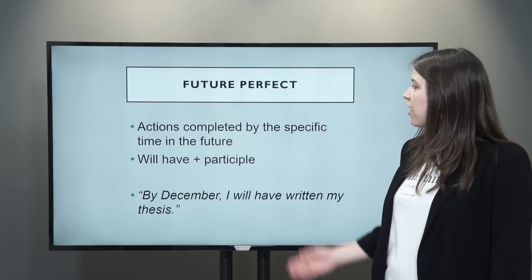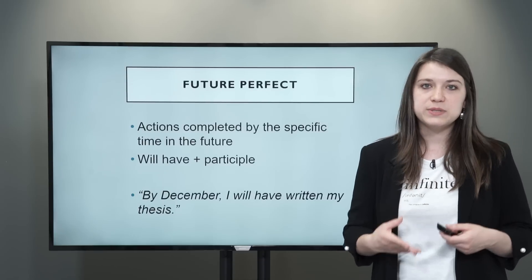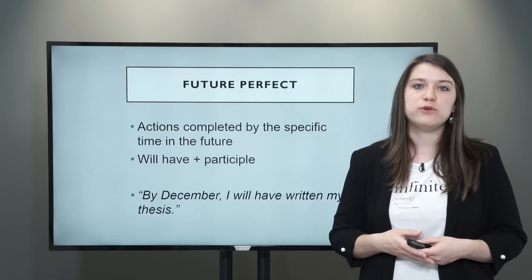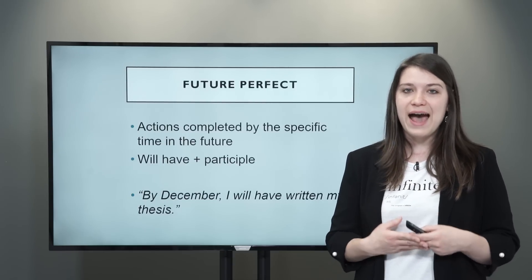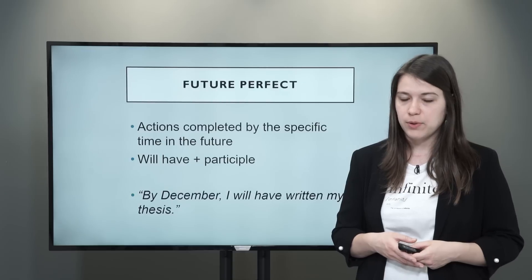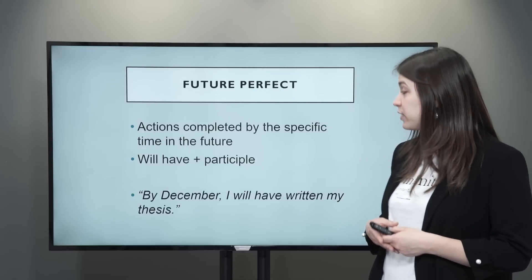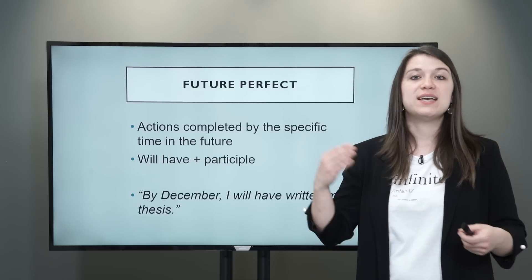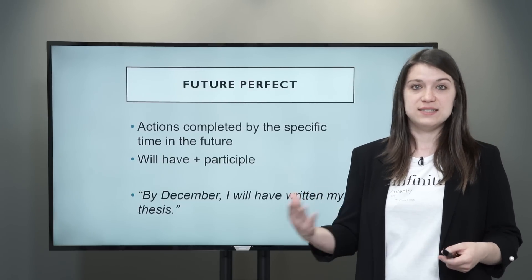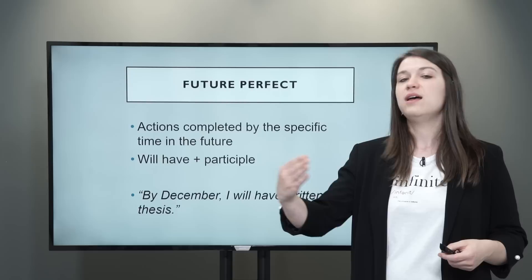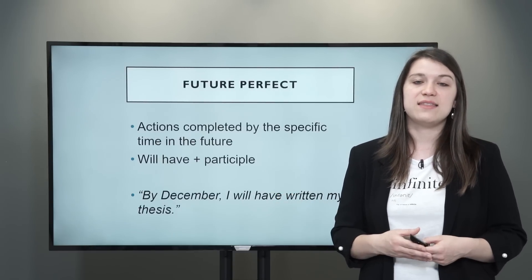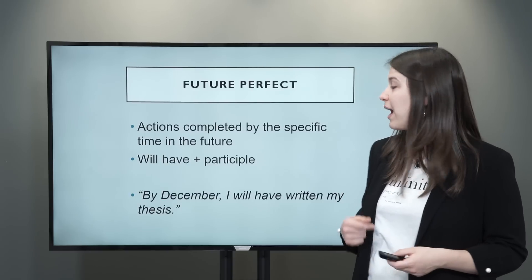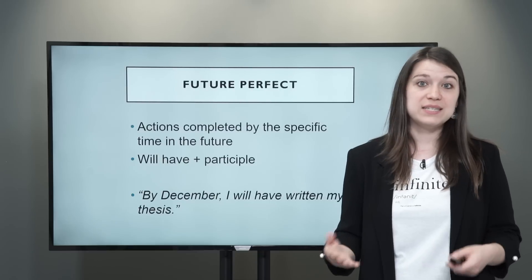The future perfect — these are actions completed by a specific time in the future. We form the future perfect with will have plus the participle. For example: by December, I will have written my thesis. December is a specific point in the future, and you're saying that you will complete the writing. I will have written means that it will be finished.